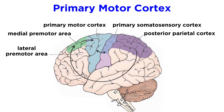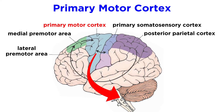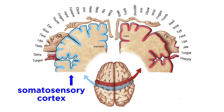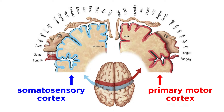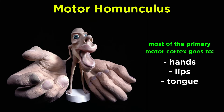Next up is the primary motor cortex. This sits in the precentral gyrus of the frontal lobe, and it is where many of the sensory motor signals converge. It is also the main area from which signals leave the brain to tell the muscles what to do. Just like the somatosensory cortex, the primary motor cortex is somatotopic, meaning that specific regions of the cortex correspond with specific regions of the human body. We can look at the motor homunculus to see how these regions are mapped, and again we see that the hands get a lot of real estate, as do the facial features.